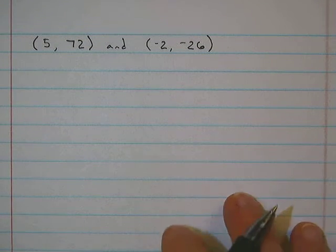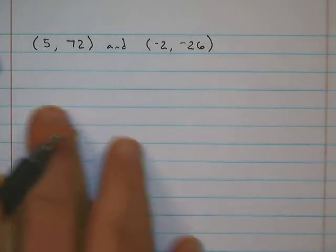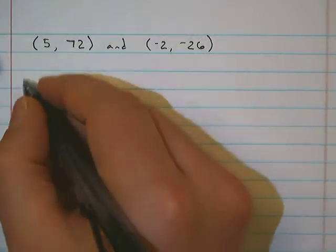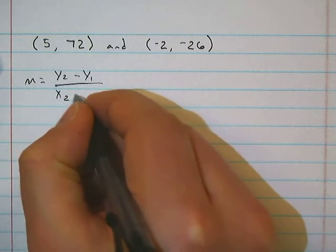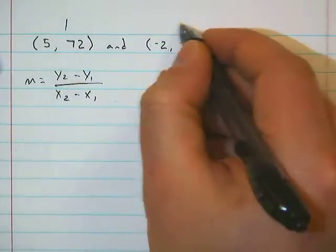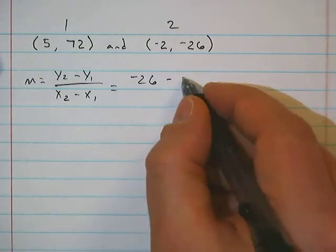Let's do one last example. We're just given two points. So just given two points, we can say it's a linear function. We're going to show it's linear by proving there's a slope. So m is equal to y2 minus y1 over x2 minus x1.